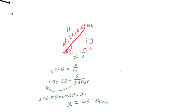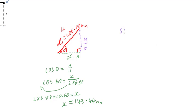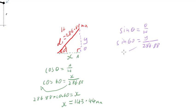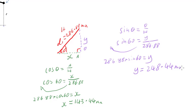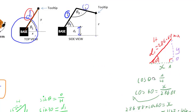Doing the same for y, but now because we have opposite and hypotenuse, we're going to use sine. Sin θ = opposite / hypotenuse. Sin 60° = y / 286.88. Multiplying that up, y = 286.88 × sin 60 = 248.44 millimetres. And there we have it — we now have x, y, and z.